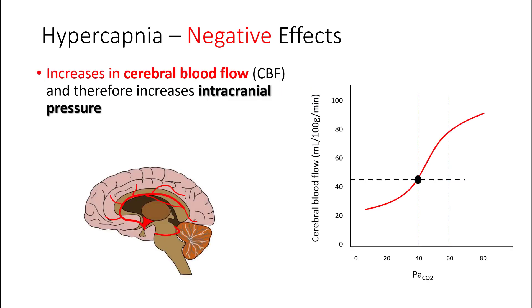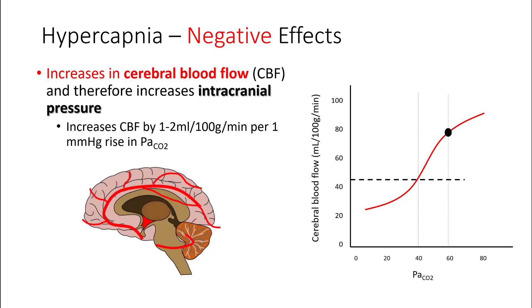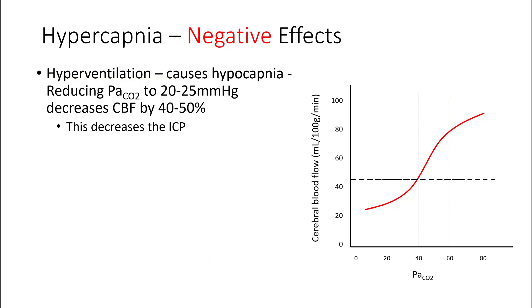A more important effect of hypercapnia is that it increases cerebral blood flow and therefore increases intracranial pressure. Cerebral blood flow increases by 1 to 2 ml per 100 grams per minute per millimeter rise of PaCO2. To decrease the ICP, you can hyperventilate these patients, which causes hypocapnia. If you reduce the PaCO2 to 20 to 25 millimeters of mercury, you can decrease cerebral blood flow by 40 to 50 percent, and this should decrease your ICP.